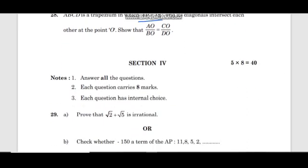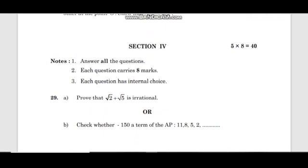Last section has long answers with 8 marks each, 5 questions making 40 marks. There is internal choice available. First question has a choice: Prove that root 2 plus root 5 is irrational, or check whether minus 50 is a term of the AP 17, 14, 11, 8, 5, and so on.